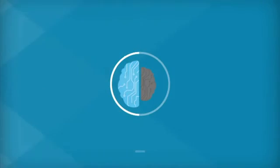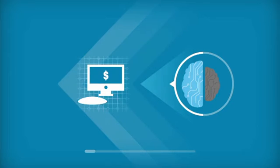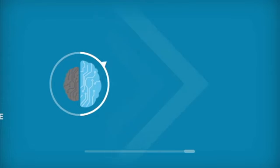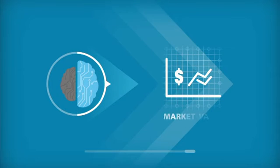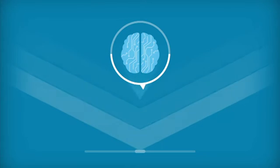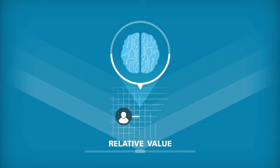The left brain tells us what an impression is worth to a particular advertiser, or the buyer value, and the right brain tells us the price at which it will clear, or the market value. The ratio between these is called relative value, which measures how much bang an advertiser gets for their buck.